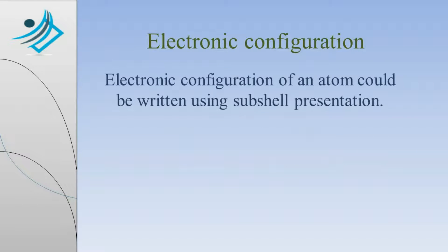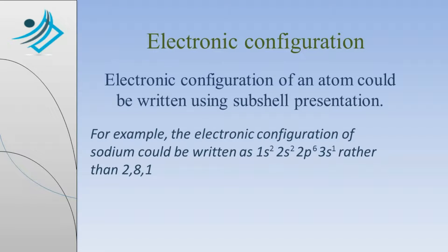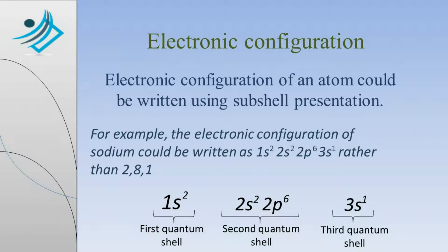The electronic configuration of an atom could be written using subshell presentation. For example, the electronic configuration of sodium could be written as 1S2, 2S2, 2P6, 3S1 rather than 2, 8, 1. For sodium, the first quantum shell holds 1S2. The second quantum shell holds 2S2 and 2P6. The third quantum shell holds 3S1.